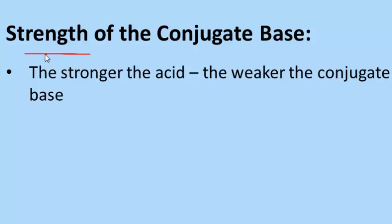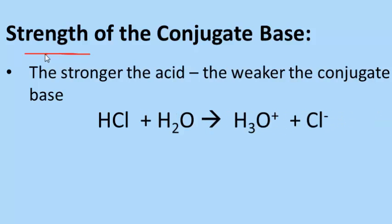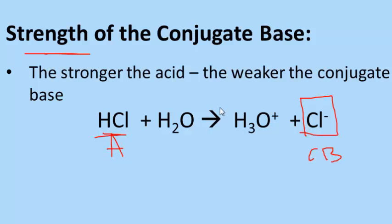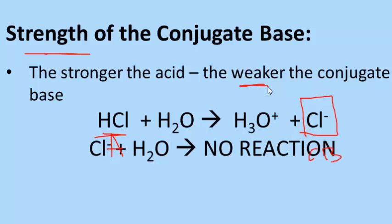Let's look at examples. HCl is definitely a strong acid, so its conjugate base is chloride. Since HCl is a strong acid, Cl⁻ is a weak conjugate base — it does a horrible job at accepting protons. Chloride does not do much with water. If you put chloride ion with water, there would be no reaction because it is the conjugate base of a strong acid.